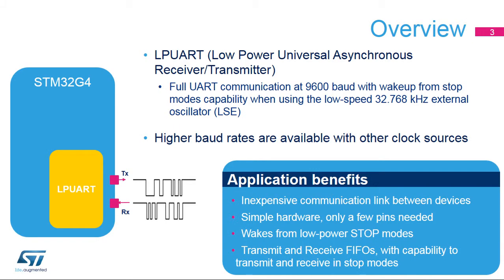The Low Power Universal Synchronous Asynchronous Receiver provides full UART communications at 9600 baud when the LPUART is clocked using a low-speed external 32.768 kHz oscillator named LSE. Higher baud rates can be reached when it is clocked by clock sources different from the LSE clock.